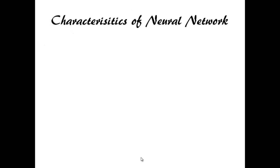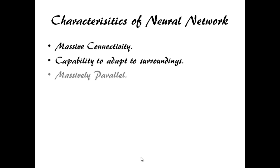Characteristics of neural network: Massive connectivity, capability to adapt to surroundings, massively parallel, fault tolerant, robust.